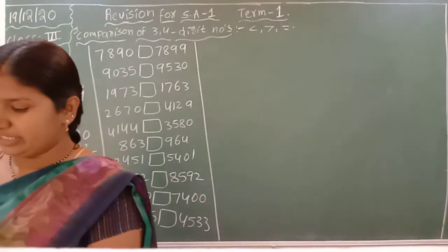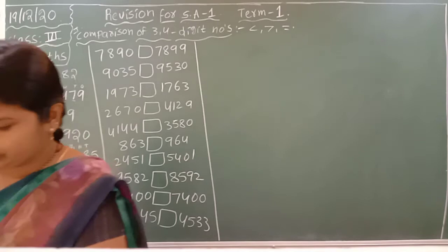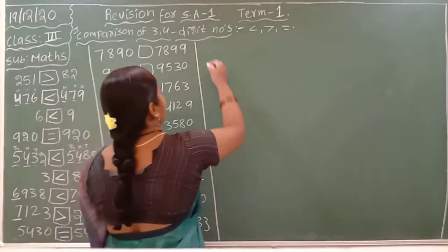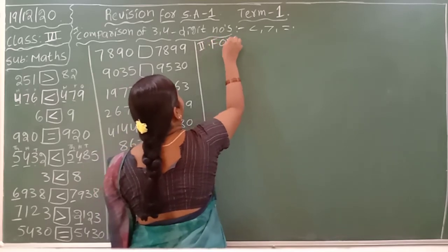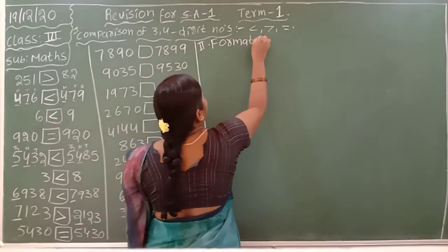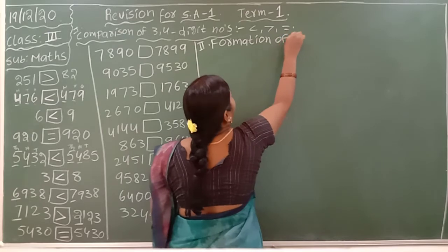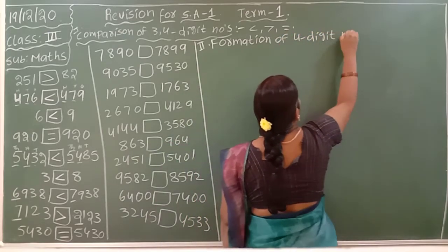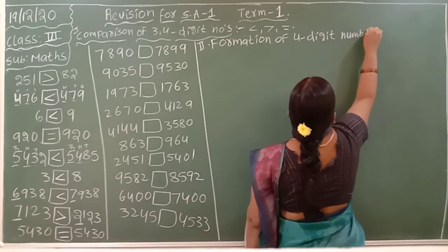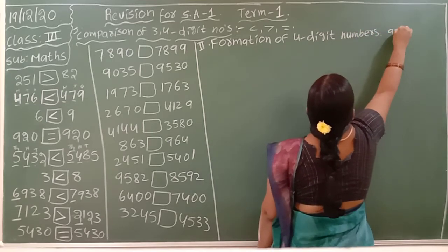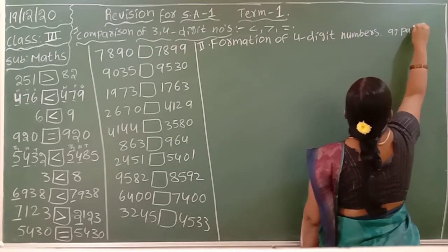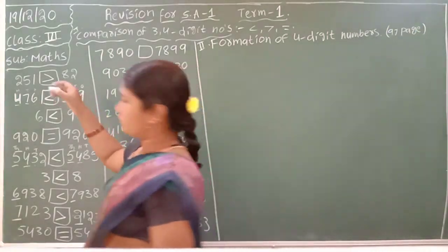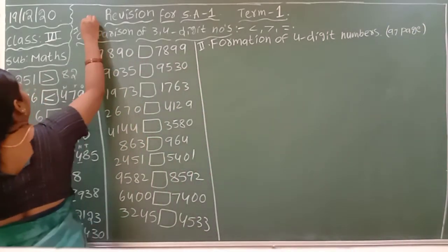After that we will discuss formation of 4-digit numbers. Formation of 4-digit numbers — it is in your textbook page number 97. And the comparison questions are in your textbook page number 95.